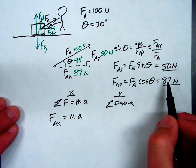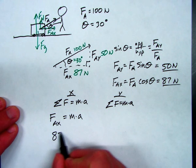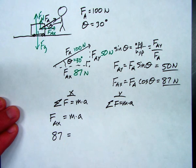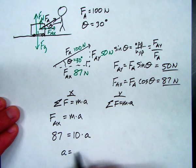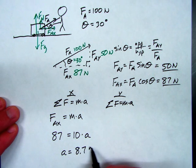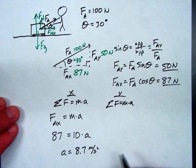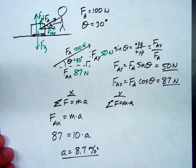That's 87 newtons. The mass of Bernie the block is still 10, so my acceleration will be 8.7 meters per second squared. And if that's all they were asking, then I'm done with the problem.